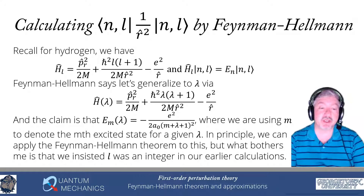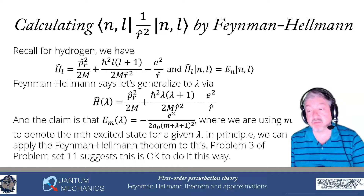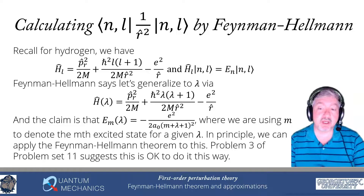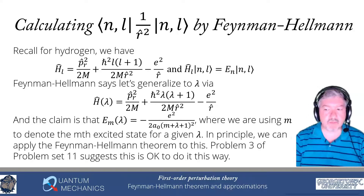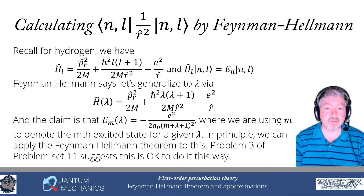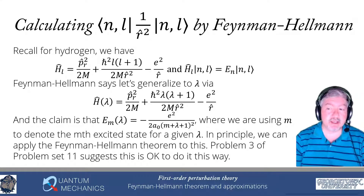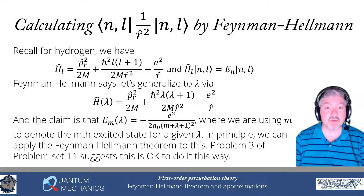However, problem 3 of problem set 11 suggests this is an acceptable thing to do. After solving that problem, you should be able to verify that this form of the energy — where m is the index indicating the m-th excited state — is valid. So now we have lambda in the Hamiltonian and lambda in the energy, and we simply differentiate both sides to apply Feynman-Hellman.